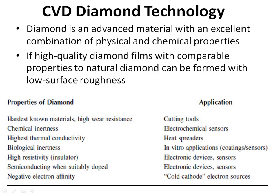CVD Diamond Technology. Diamond is an advanced material with an excellent combination of physical and chemical properties. Properties of diamond: hardest known material, high wear resistance, chemical inertness, highest thermal conductivity, biological inertness, high resistivity as an insulator, and semiconducting when suitably doped with negative electron affinity. Applications include: cutting tools, electrochemical sensors, heat spreaders, in vitro applications, coatings and sensors, electronic devices, sensors, and cold cathode electron sources.